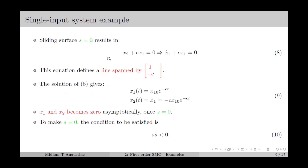For this sliding variable, the sliding surface is defined by s equal to 0, which results in equation number 8: the sliding surface is x2 plus cx1 equal to 0. This can be rewritten as x2 equal to minus cx1, which defines a line in the state space with slope minus c, spanned by the vector (1, -c). We can rewrite the equation as dx1/dt equal to minus cx1, which is a first order linear differential equation. The solution gives x1(t) as x1(0) times e raised to minus ct, and x2(t) as minus c times x1(0) times e raised to minus ct. So both terms converge to 0 exponentially, ensuring x1 and x2 become 0 asymptotically once s equals 0.